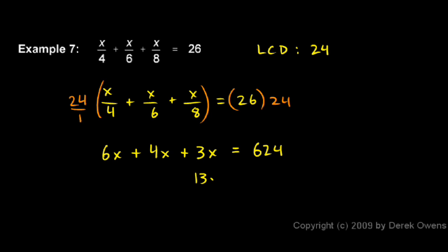And then the last step is simply to divide both sides by 13. On the left, the 13s cancel out. So x is 624 divided by 13. And that does work out to a nice even number. For x, it turns out, is 48.